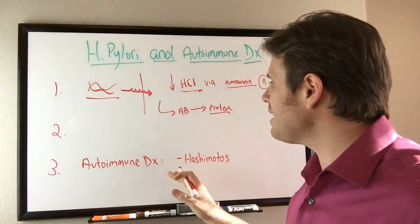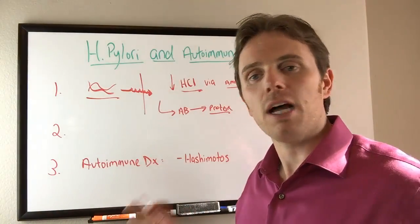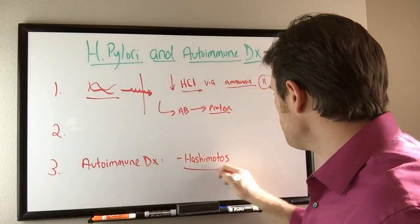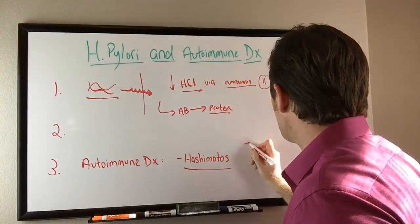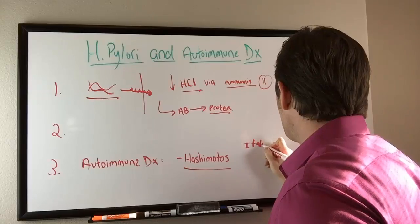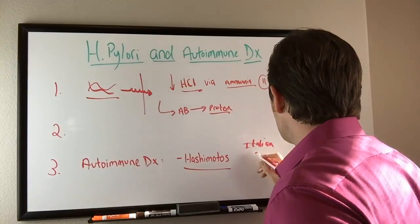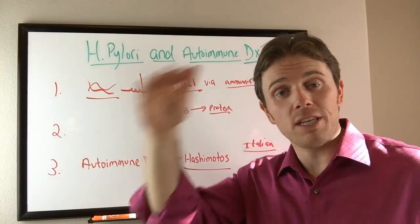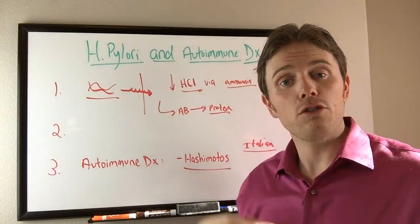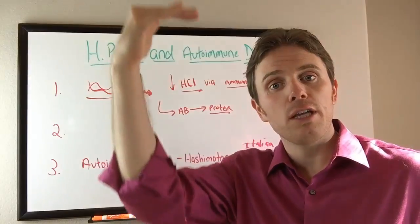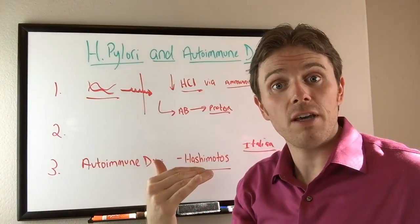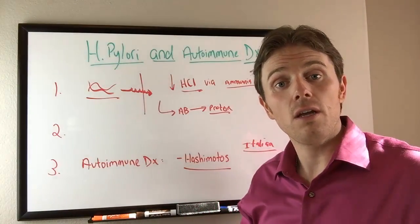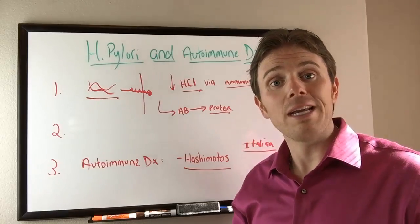There's also studies connecting H. pylori with Hashimoto's. There's one Italian study I'll put in the video below where they actually took patients that had Hashimoto's with a known antibody level and they treated the H. pylori. They looked after the treatment two to three months later and they saw a significant reduction in thyroid antibodies.